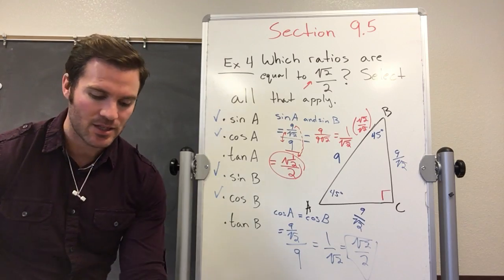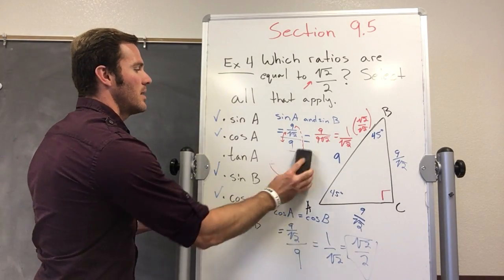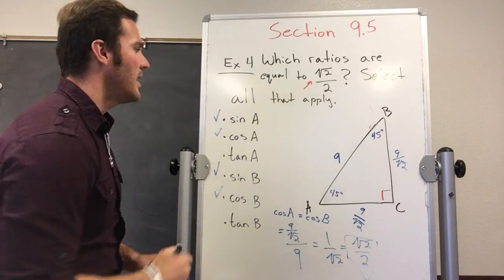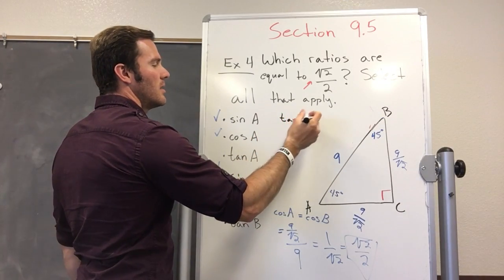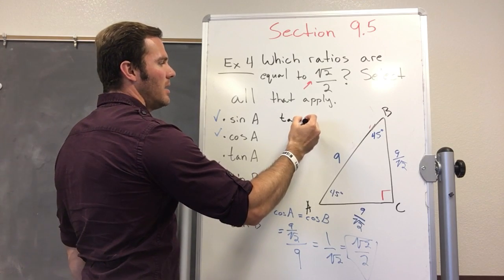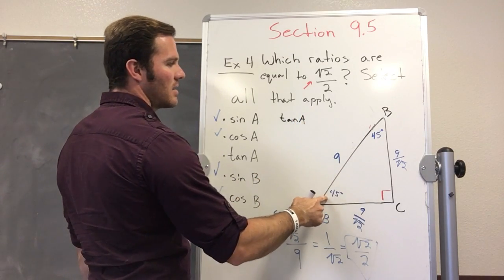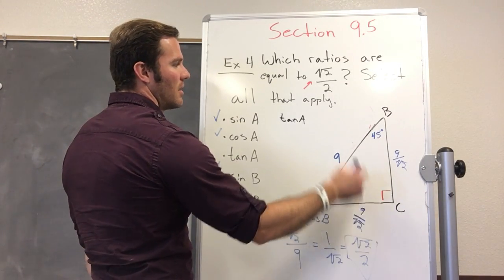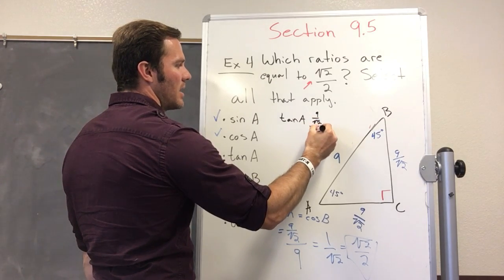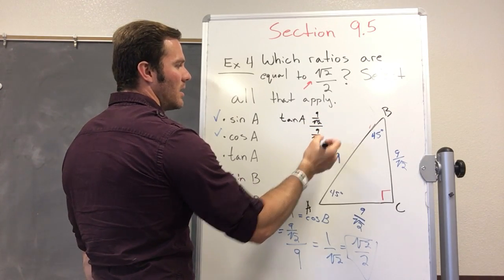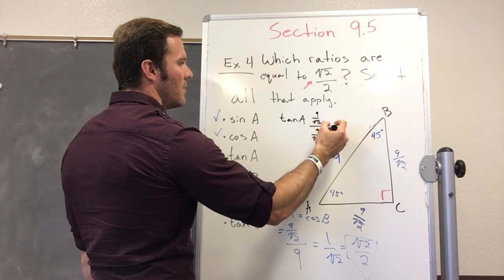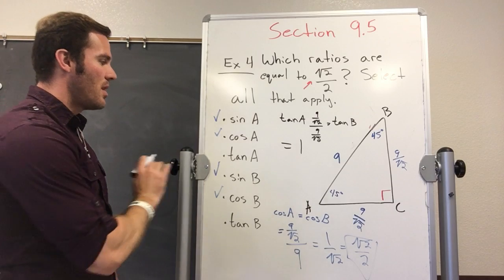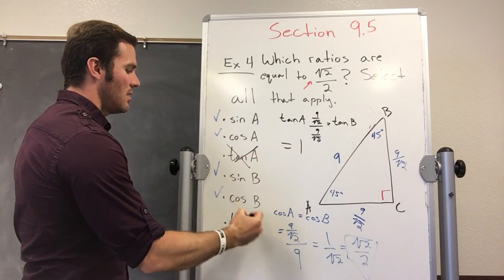Now let's look at tangent. I'm going to erase right here. Tangent is opposite over hypotenuse. So tangent A is, not opposite over hypotenuse, opposite over adjacent. Which is 9 over square root of 2 over 9 over square root of 2. Tangent B, same thing. Same thing as tangent B. And that comes out to be 1. And 1 does not equal it. So not tangent A or tangent B.